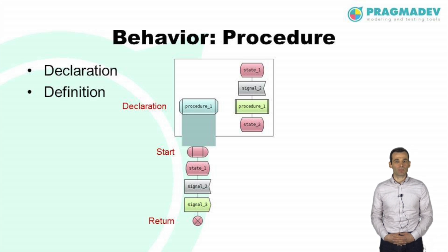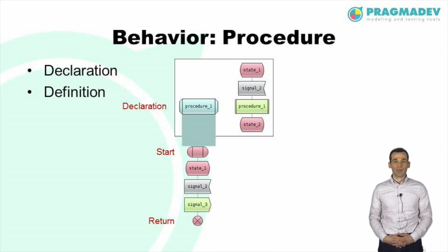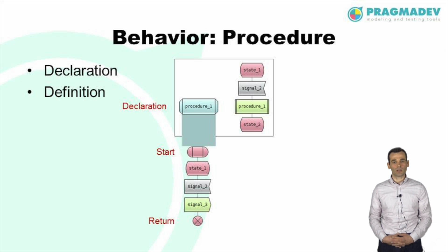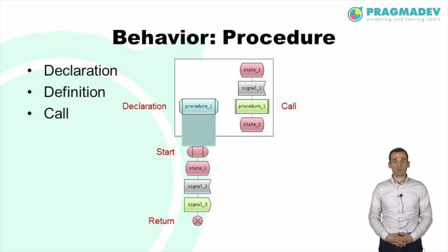Procedures are used to factorize behavior — a behavioral pattern that repeats itself several times can be defined as a procedure, reducing the size and complexity of the model. Behavior in a procedure is modeled using state machines like in processes. However, they have a different start symbol and unlike processes, they return rather than stop. Procedures can accept parameters and return a value to the caller. The caller of a procedure can be either a process or another procedure, and a call to a procedure will interrupt the execution of the current transition until the procedure returns.